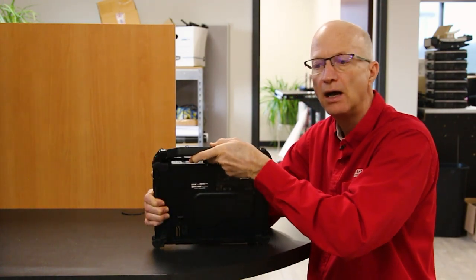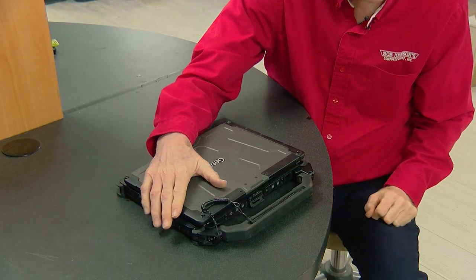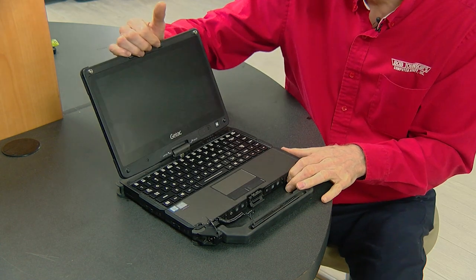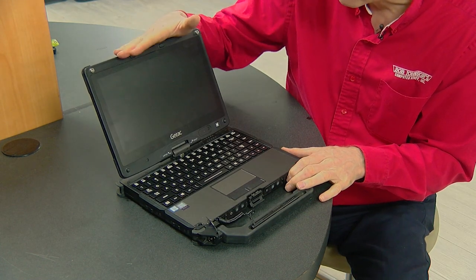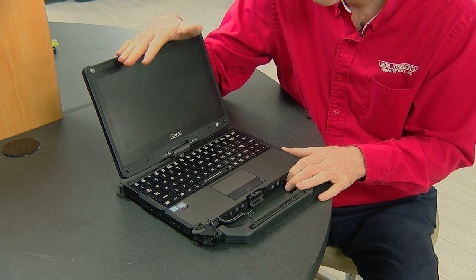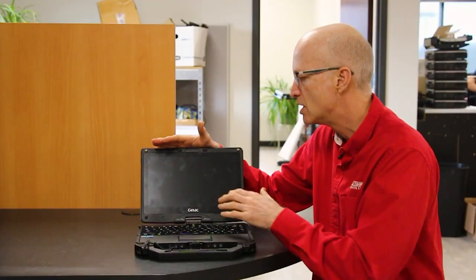Number three, number three is the screen. The screen itself is an 11.6 inch screen and it's got the LumiBond 2.0 design, so it's capacitive touch. It's very responsive, and with that LumiBond, it's very rugged so it doesn't break as easily as some of its competitors.